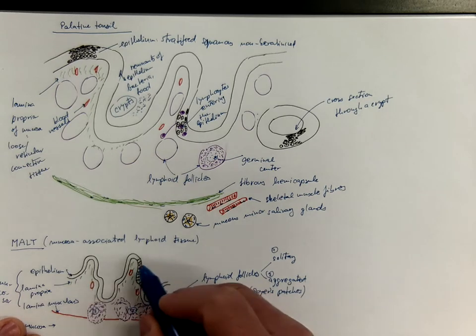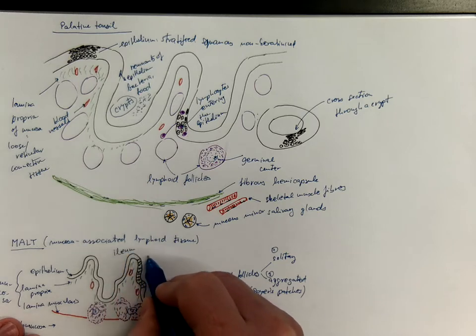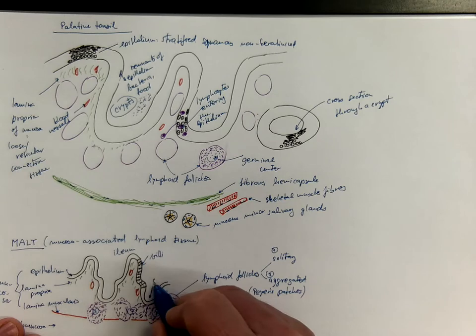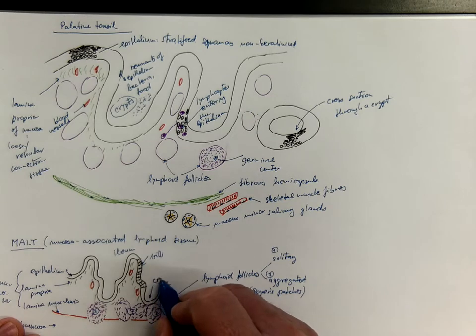And this would be an example from the ileum. Okay, here you have the villi, the mucosa, the intestinal crypts.